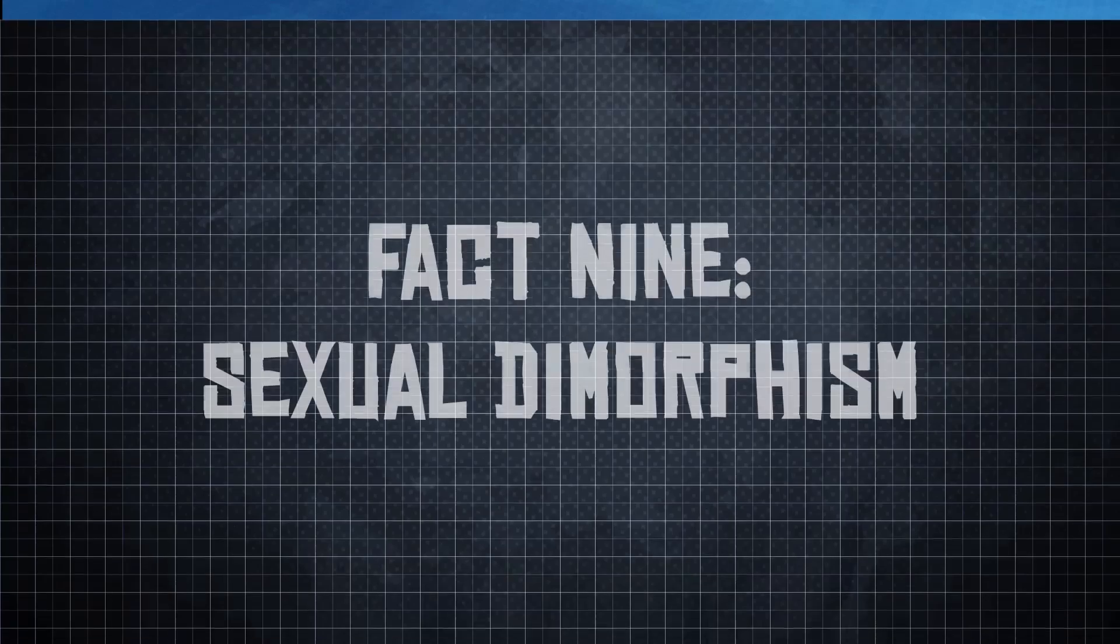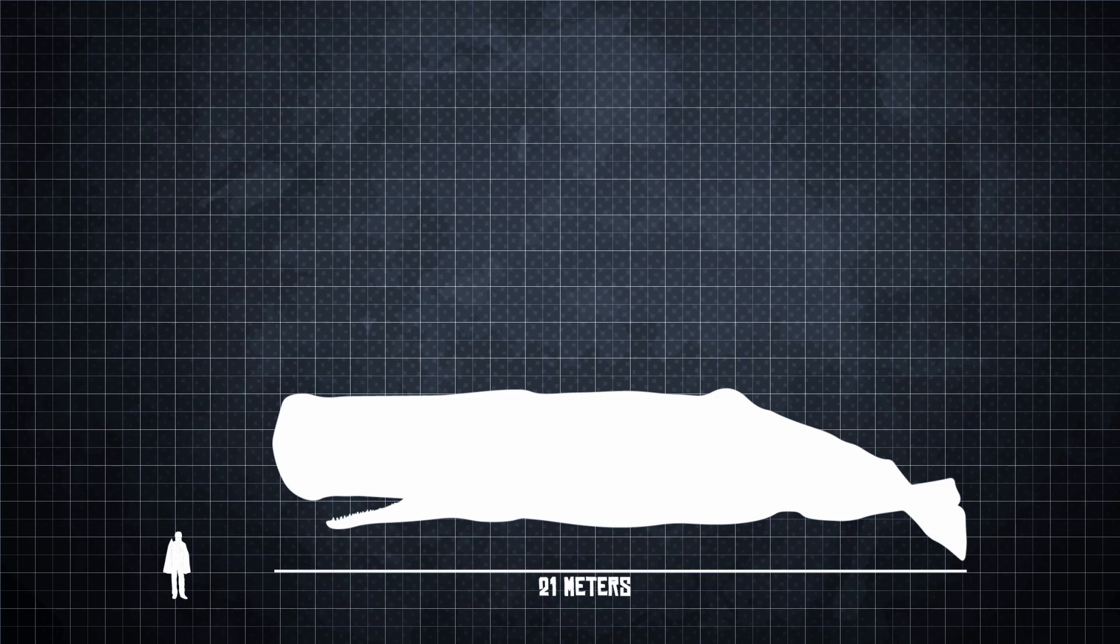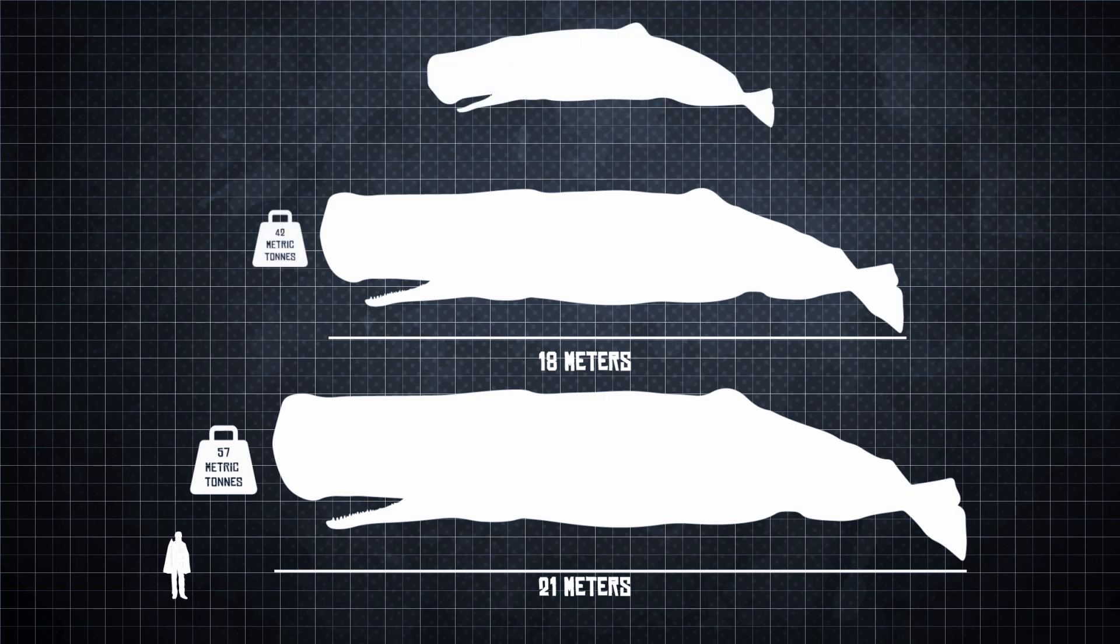Male and female sperm whales differ in more ways than just their lifestyles. For starters, the largest of male sperm whales measure 21 meters in length and weigh up to 57 metric tons. Average males tend to be around 18 meters in length and weigh 42 metric tons. Female sperm whales, on average, are only 12 meters long and weigh 15 metric tons in comparison.